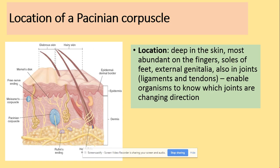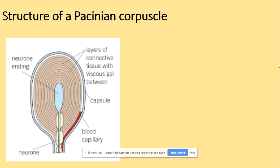So where can we find the Pacinian Corpuscle? It's found deep in the skin, and it enables organisms to know which joints are changing direction — for example, because it's also found in the ligaments and tendons. Looking at the structure, there are lots of blood capillaries around. We've got the capsule, layers of connective tissue with gel in between. This is where the neuron will end, and here we've got the Schwann cells.